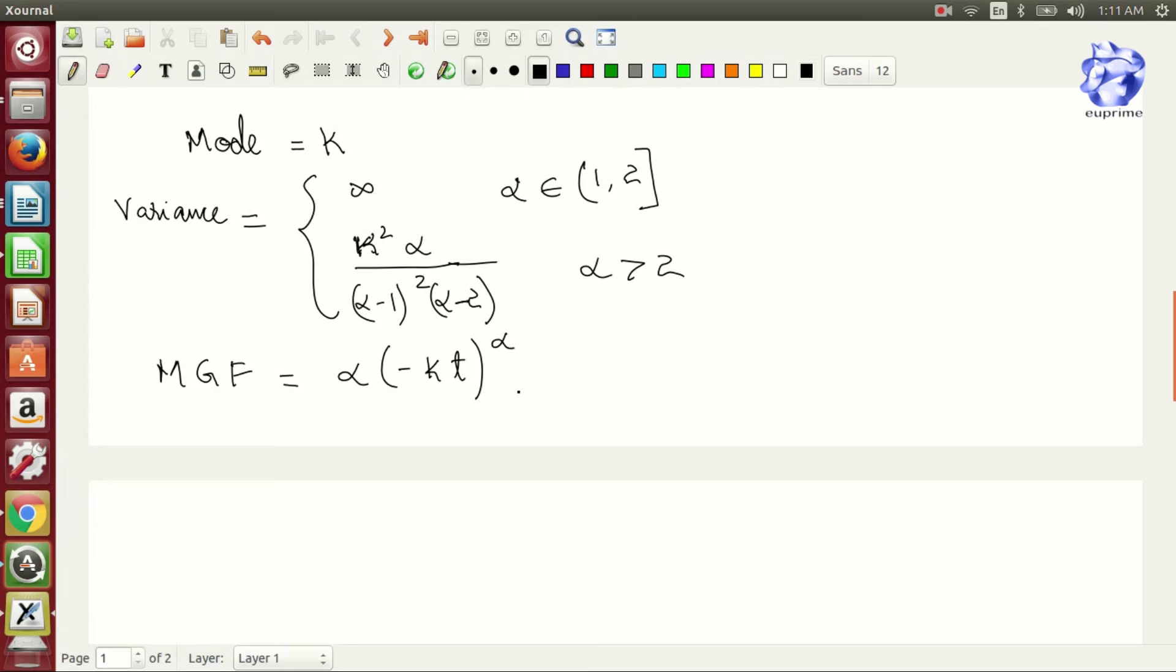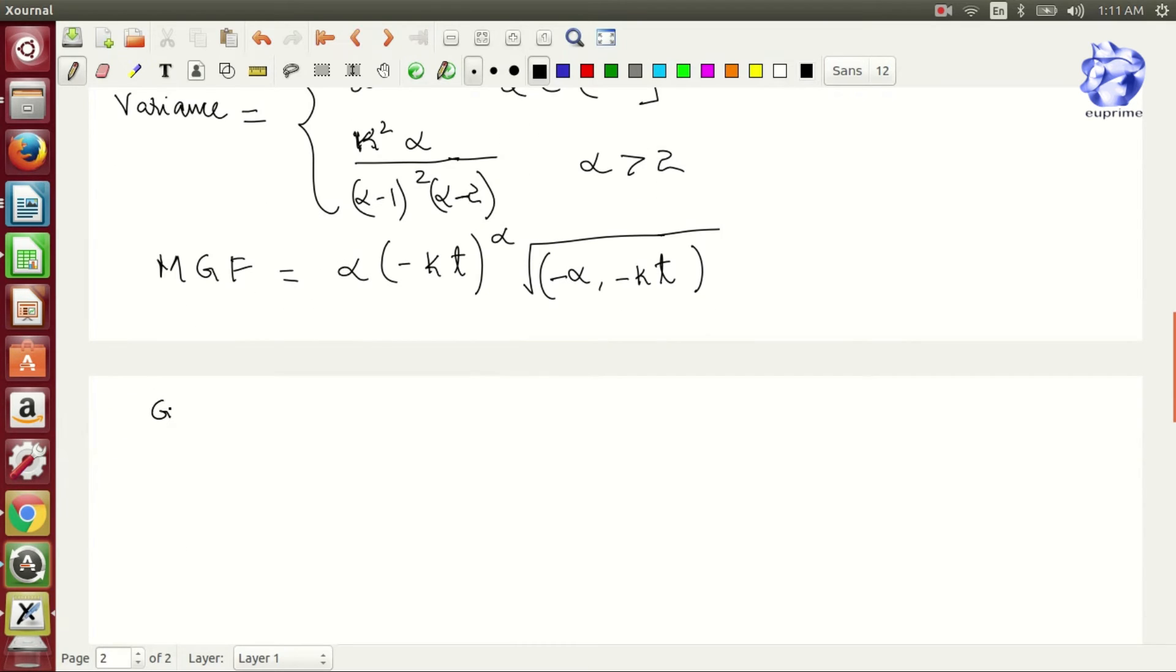The MGF, that is moment generating function, is given by alpha times (-K)^alpha times Gamma(-alpha, -iKt). Now let's write down a few applications.